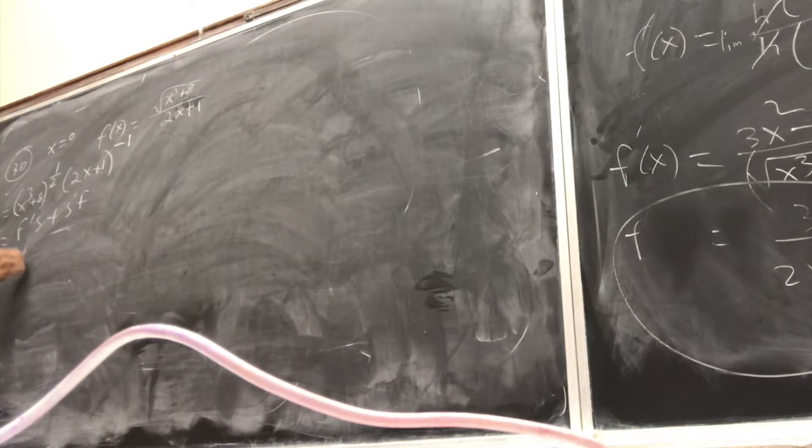And now I'm going to really do the product rule. Half, x cubed plus 8 to the negative 1 over 2. Derivative of inside is 3x squared times second, 2x plus 1 to the minus 1. Plus.